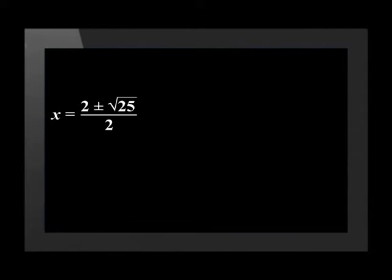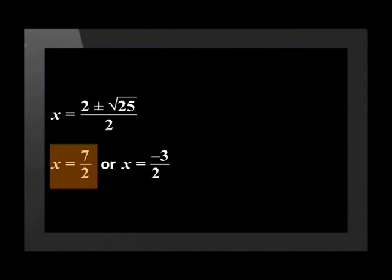For example, in this quadratic formula, x is equal to 2 plus or minus the square root of 25, all over 2. The number underneath the square root is 25, which is a perfect square. So if we solve for x, the roots will be x equals 7 over 2, or x equals negative 3 over 2. These roots are real because they exist, and rational because their decimals either recur or terminate. Therefore, the nature of the roots is real and rational.